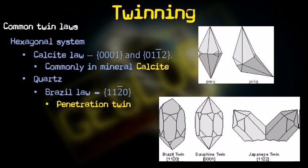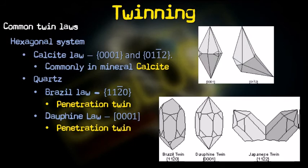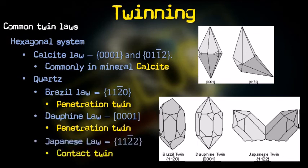Quartz shows three types of twinning. Brazil law is (112̄0) — a penetration twin. Dauphiné law is also a penetration twin, but defined by a twin axis (0001) parallel to the growth axis; both Brazil and Dauphiné are transformation twins occurring due to changes in pressure and temperature conditions. Japanese law is (112̄2) — a composition plane and a contact twin, consisting of two halves united by a composition plane such that one part is the mirror image of the other, as seen in the figure.